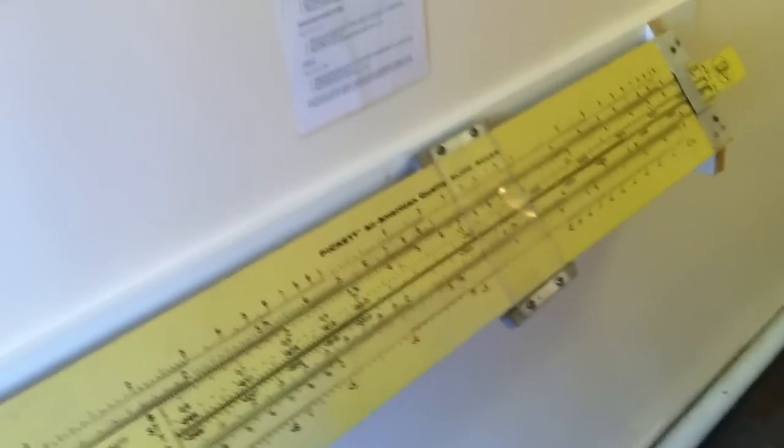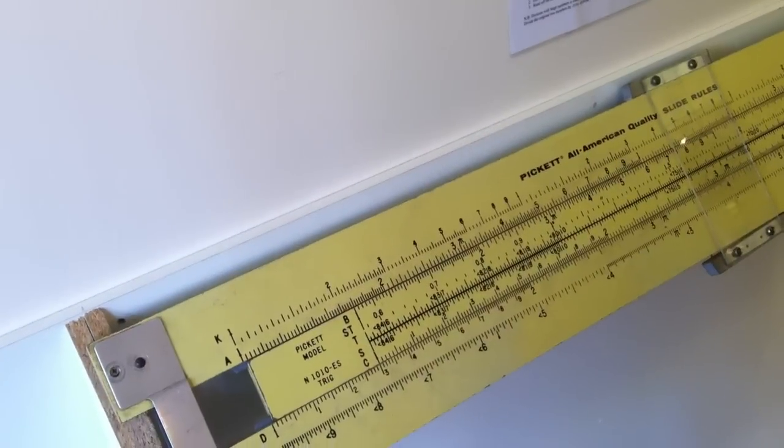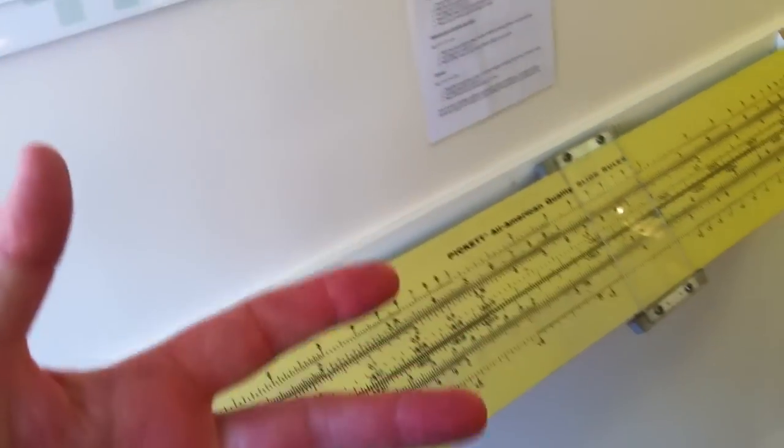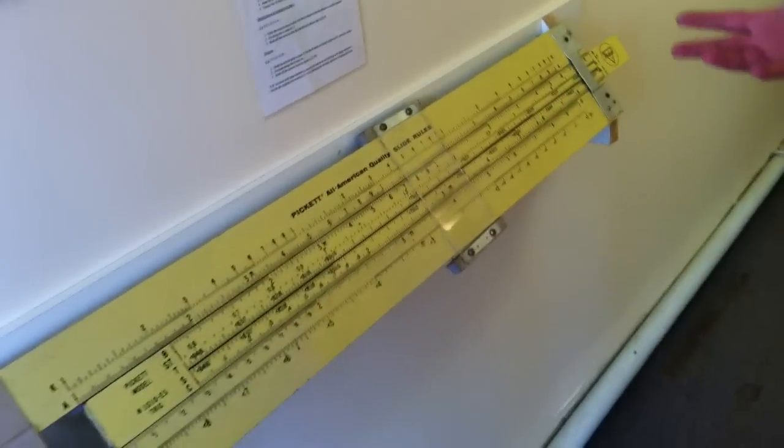Now does the slide rule only do multiplication, or if you want to do division? You can reverse the process for division. Right. And they would have extra scales on for things like sines and cosines and so on.